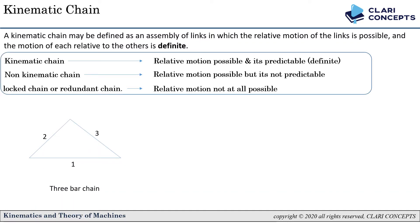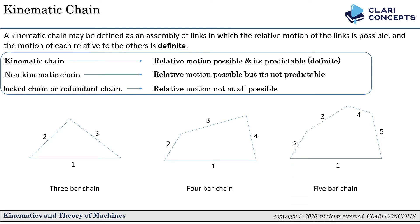We have three examples: three bar chain, four bar chain, and five bar chain. The three bar chain is an example of a locked chain — relative motion between any of the links is not possible. The four bar chain has relative motion that is possible and also predictable, so it is a kinematic chain. The five bar chain has relative motion between links but it is indefinite, so it is a non-kinematic chain.